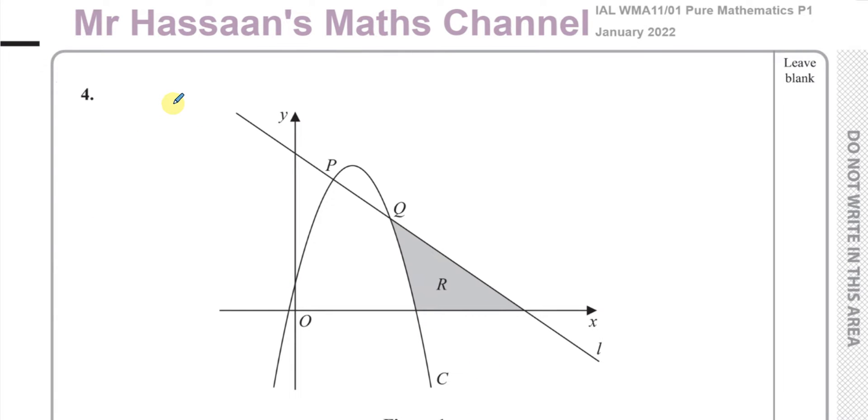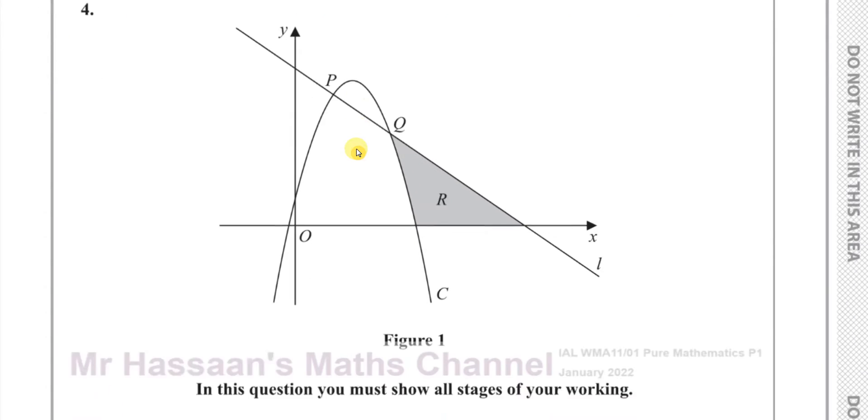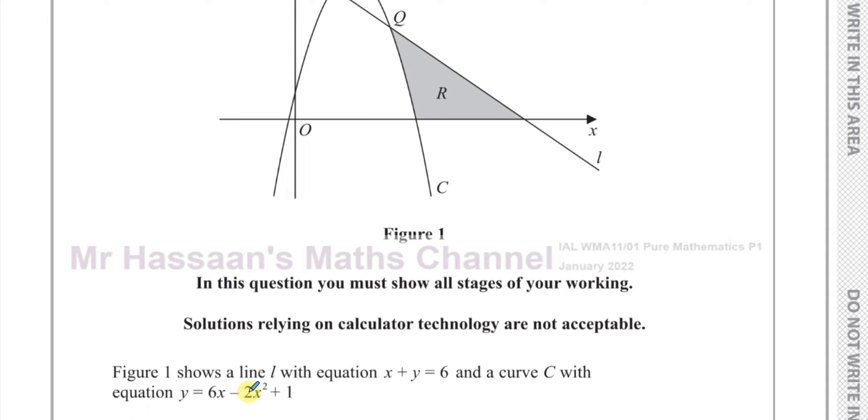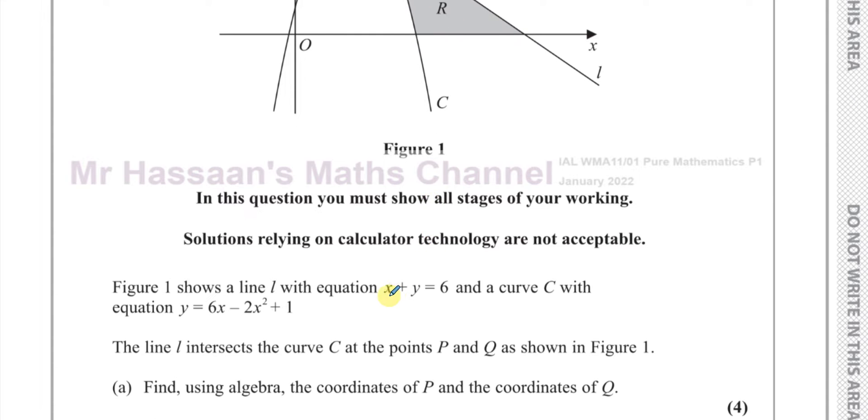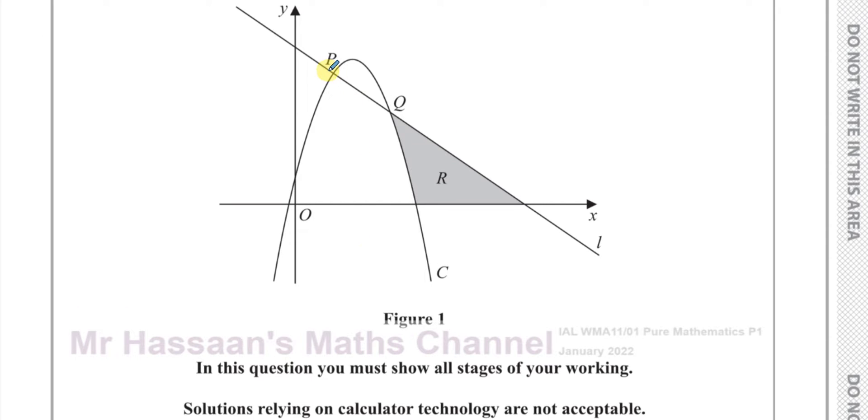I'm now answering question number four from the January 2022 International A-Level Edexcel Pure Mathematics P1 paper. This question is about a curve and a straight line called L. They've told us the line has equation x + y = 6, and the curve C has equation y = 6x - 2x² + 1. The line intersects the curve at points P and Q as shown in the diagram.